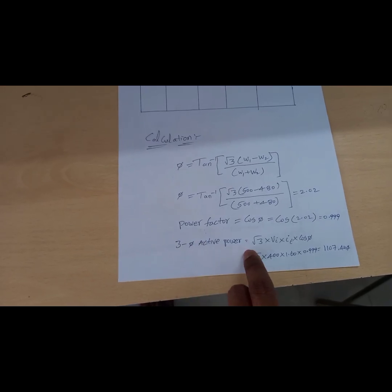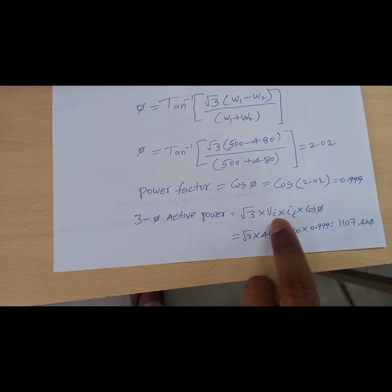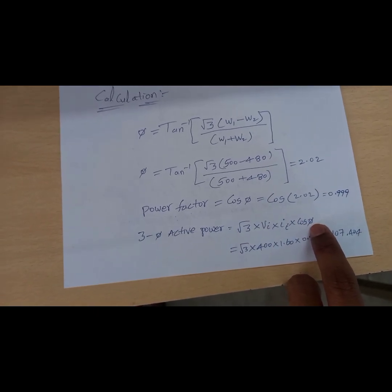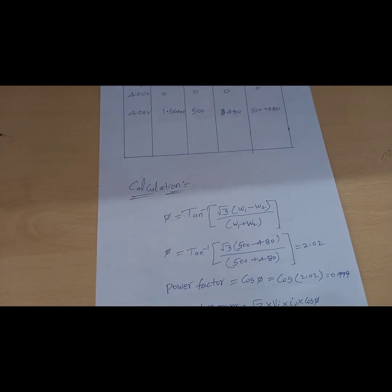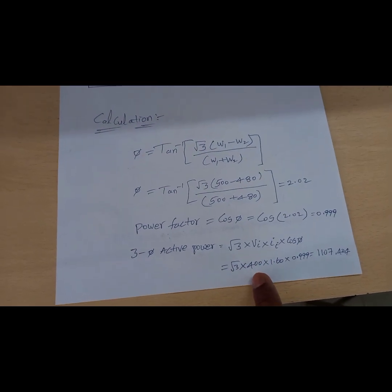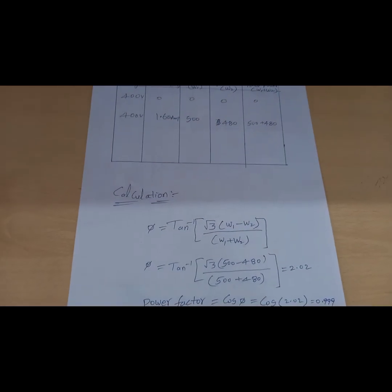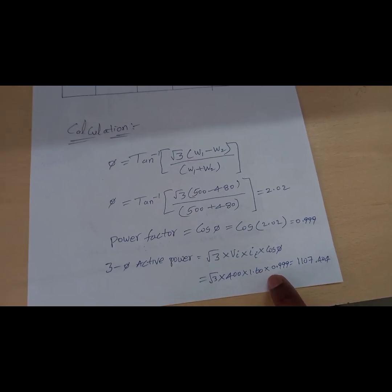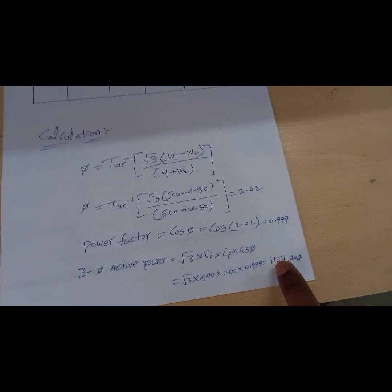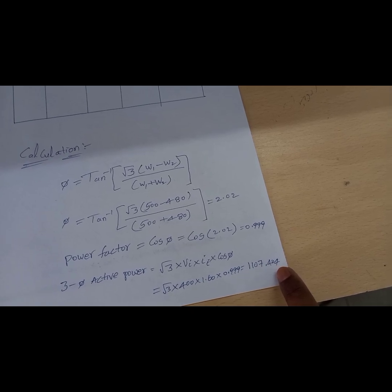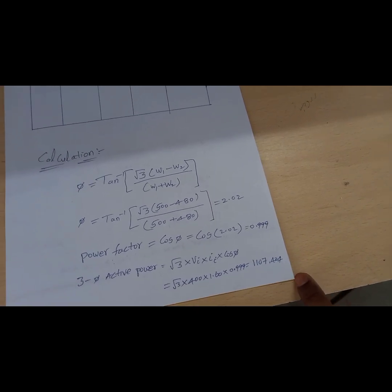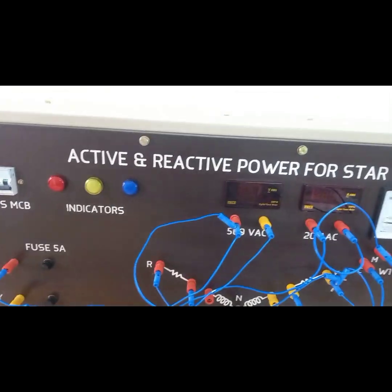The three-phase active power formula is: P = root 3 × V × I × cos(phi). Substituting the values — voltage 400 V, current 1.60 A, power factor 0.999 — we get P = 1107.404 watts. This completes the calculation part for active power.